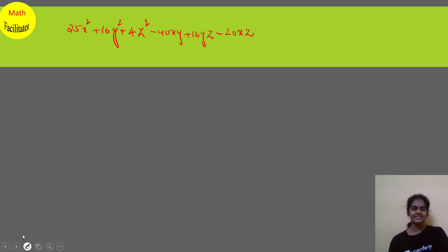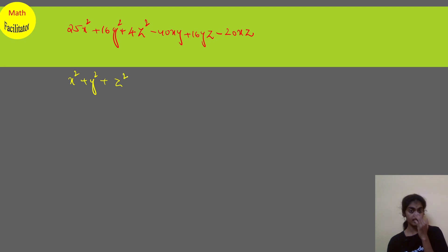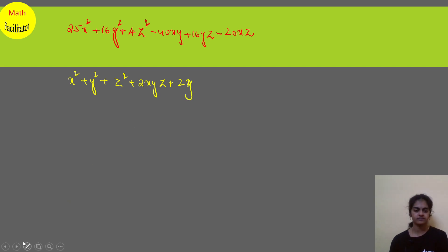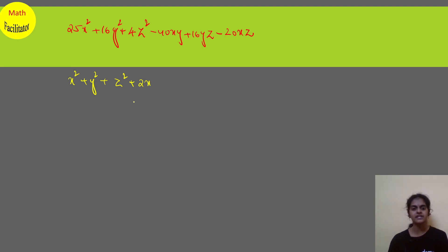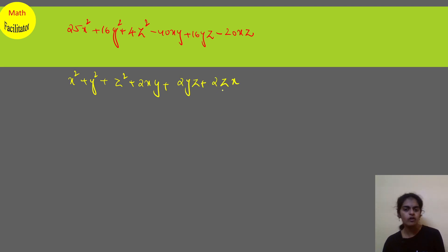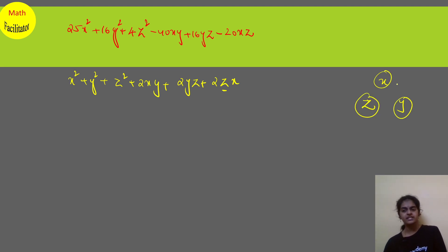If you look at this, it follows the pattern of x squared plus y squared plus z squared plus 2xy plus 2yz plus 2zx.